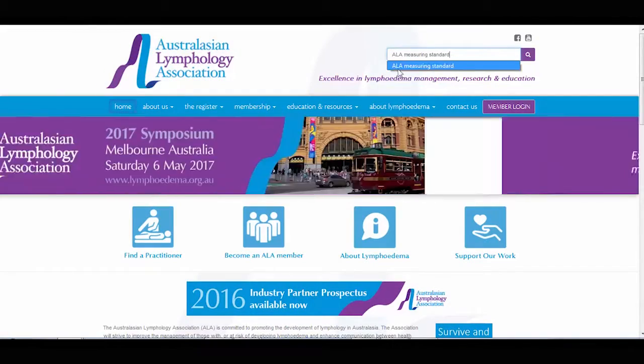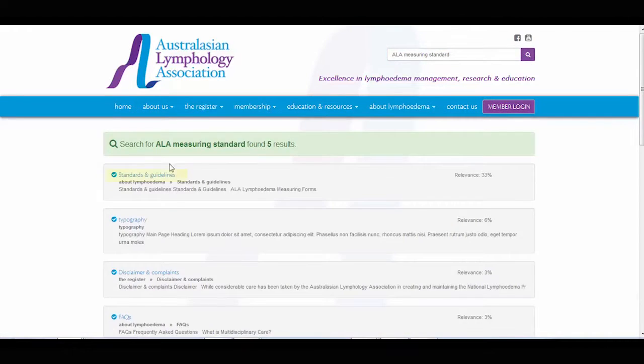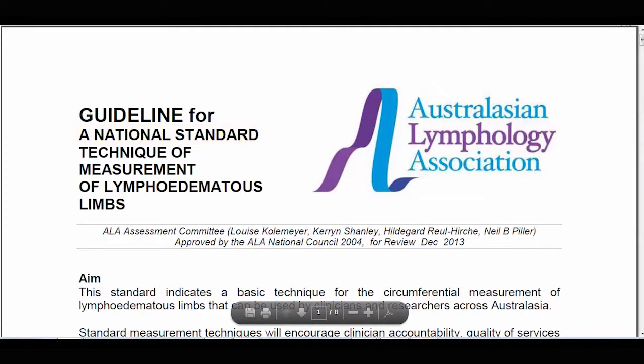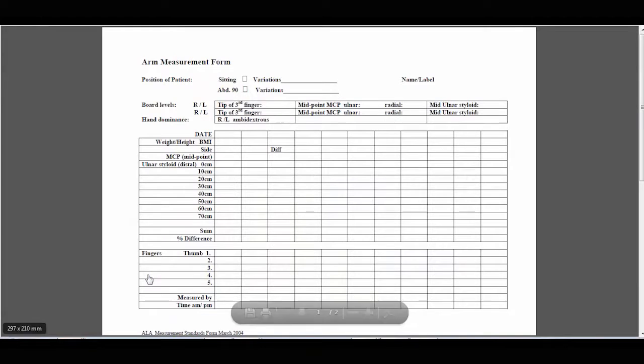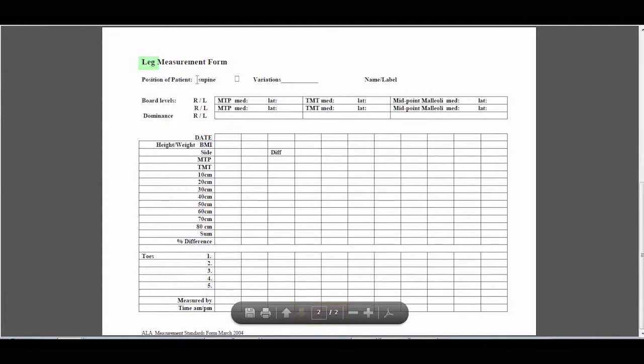The circumference measurement process follows the Australasian Lymphology Association measuring standards. These standards and the recording form used in this demonstration are contained within the Primary Health Network Care Pathway and can also be found on the Australasian Lymphology Association website.